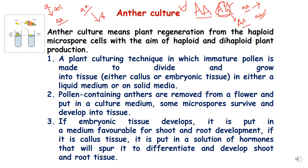So what is anther culture? Anther culture means plant regeneration from the anthers, and anthers have haploid microspore cells. Anther culture is a technique of plant regeneration from haploid microspore cells with the aim of production of haploid plants. We can also make dihaploid plants once we make haploid plants.